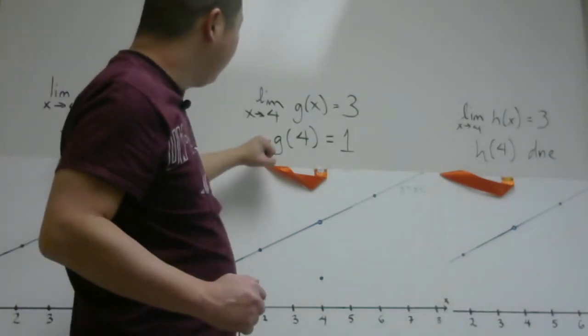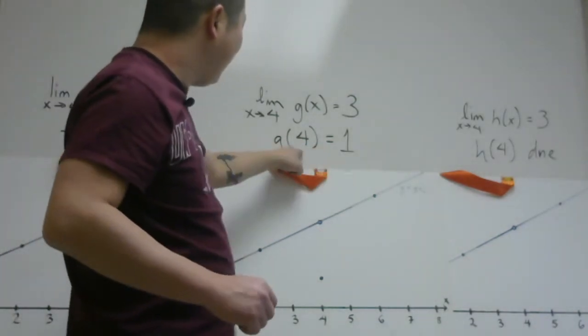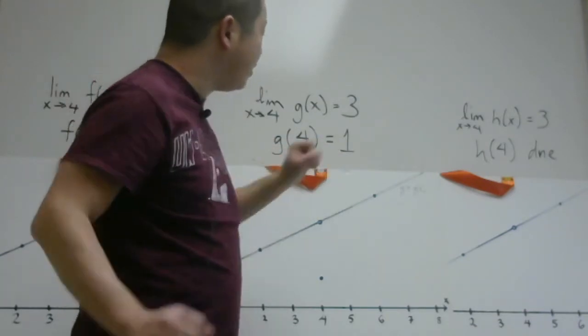Here's the algebra question here, g of 4 is equal to 1. So when the x-value is exactly 4, y is equal to 1.